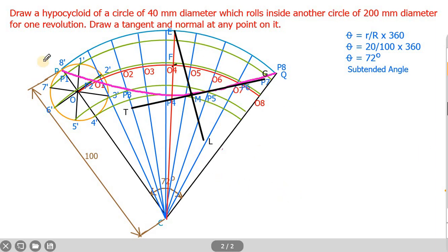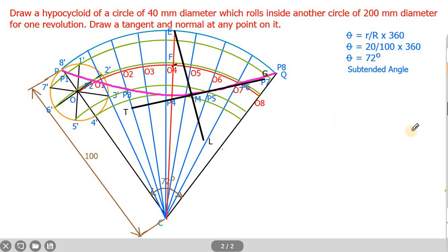That is all. We have drawn the required hypocycloid curve as per the given dimensions. On the paper, write all dimensions in mm, write down the subtended angle calculation, and label the tangent and normal: E-L is normal, T-G is tangent. In the next video, we will see about projection of straight lines. Thank you.